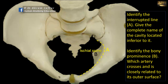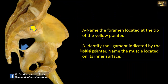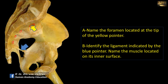The bony prominence B is the ischial spine. Name the foramen located at the tip of the yellow pointer: this is the anterior sacral foramen. There are four of these anterior sacral foramina, which allow the passage of nerves of the sacral plexus and vessels from the lateral sacral artery to supply the contents of the sacral canal inside the sacrum. The ligament indicated by the blue pointer extends between the ischial spine and the sacrum — so it is the sacrospinous ligament. The other ligament extends from the sacrum to the tuberosity of the ischium — that is the sacrotuberous ligament.